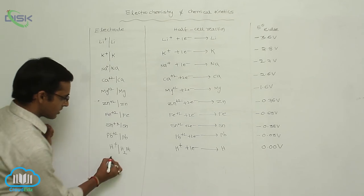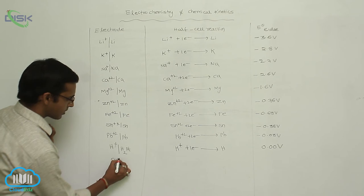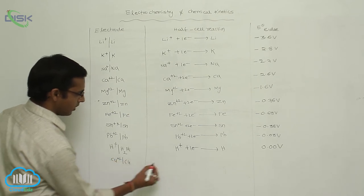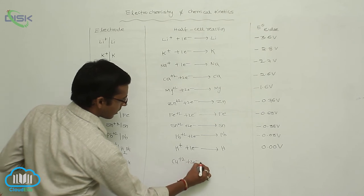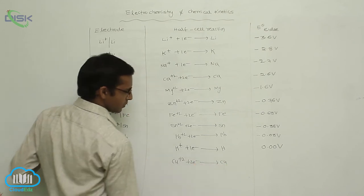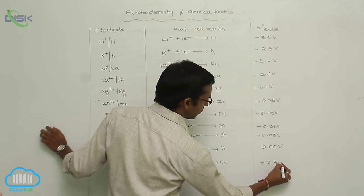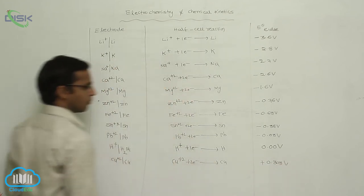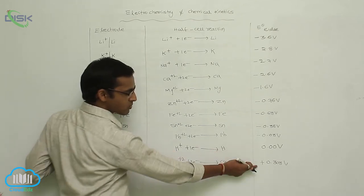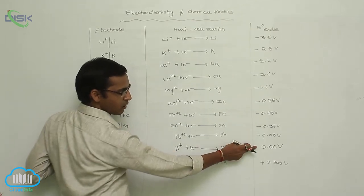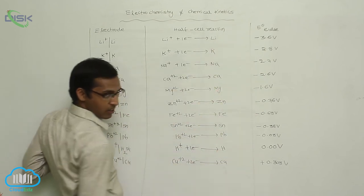Next, before silver, we consider copper: Cu²⁺ | Cu. Cu²⁺ gains two electrons and is converted to Cu. Its E° value is +0.34 V. From hydrogen onwards, the values become positive — all values above hydrogen were negative, and from hydrogen onwards they are positive.